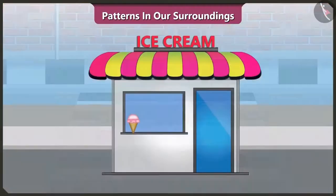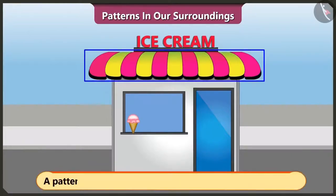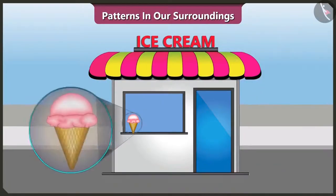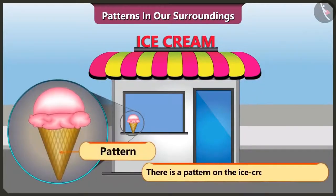Now look at the roof of this ice cream shop. Does it have a pattern? Yes, here two different color stripes have been used to make a pattern. And the ice cream cone also has a pattern.